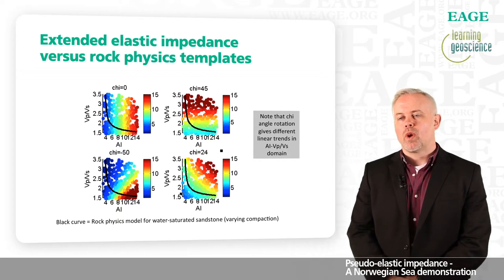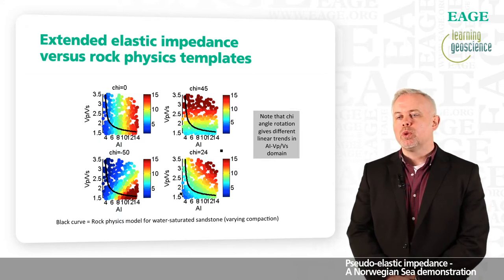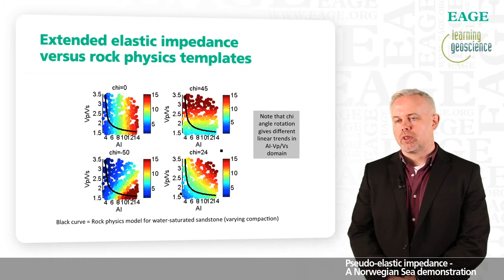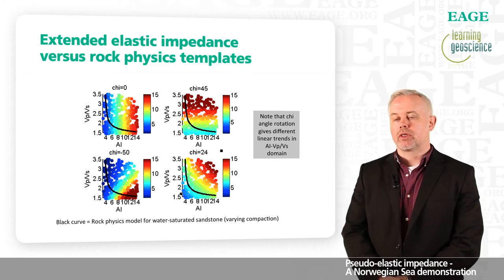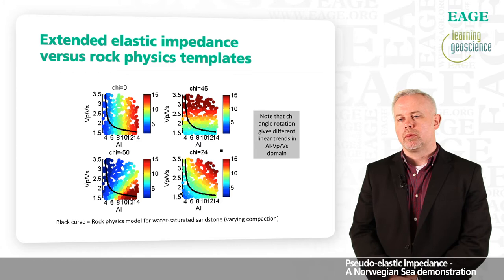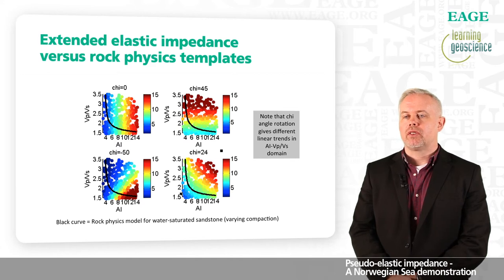Likewise, in the lower right subplot, at a Chi angle of 24 degrees, the extended elastic impedance corresponds well with the fluid trend at a given target depth, orthogonal to the rock physics compaction trend. For any given porosity, using Gassmann, we predict a fluid trend going from the upper right to the lower left in the VP/VS versus acoustic impedance crossplot. But because of the non-linearity of the highly curved rock physics trend, the fluid deviation from the background trend can vary as a function of compaction. So we need to normalize the extended elastic impedances with values that take these compaction trends into account, and we can use rock physics models to help us do that.